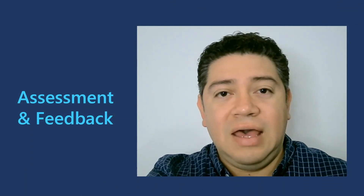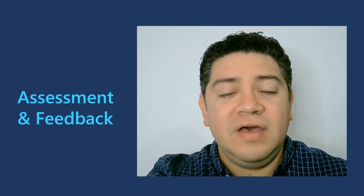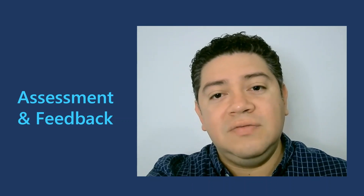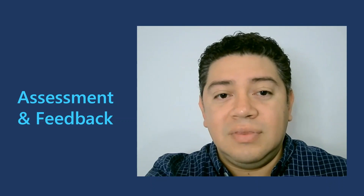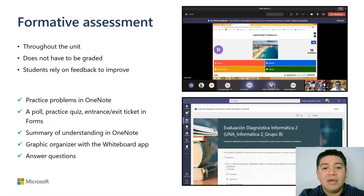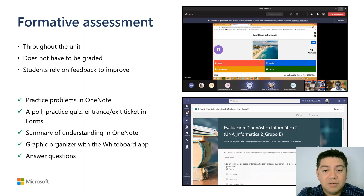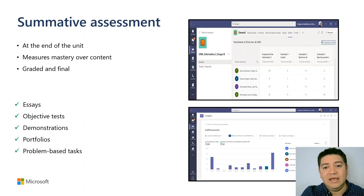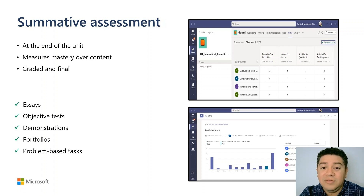The fifth element is assessment and feedback. Student growth is the focus of education. Evaluating student growth is conducted with formative and summative assessments. Formative assessments occur throughout the unit and evaluate student progress. They do not have to be graded, and students rely on feedback from these assignments to learn how they can improve and grow in the content. Students can complete practice problems in OneNote, a poll, practice quiz, entrance and exit tickets in Forms, summary of understanding in OneNote, graphic organizer with the Whiteboard app, or answer questions posed by the teacher. Summative assessments occur at the end of the unit and are graded and final. Activities like essays, objective tests, demonstrations, portfolios, and problem-based tasks are good examples of what students can do to show their learning.